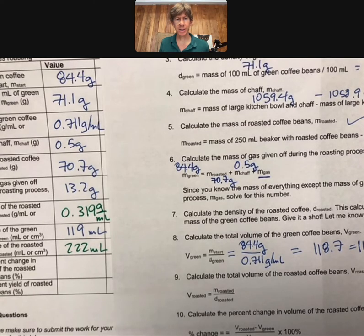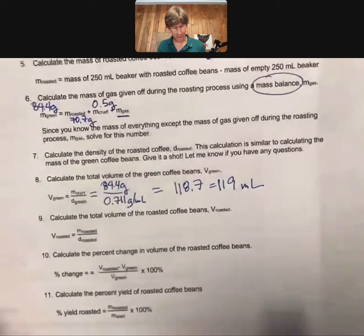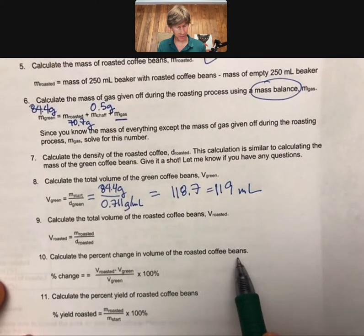I've gone ahead and filled in some of the other values that I didn't do so that I can use them in future calculations. For example, for calculation number 10, it says calculate the percent change in volume of the roasted coffee beans.